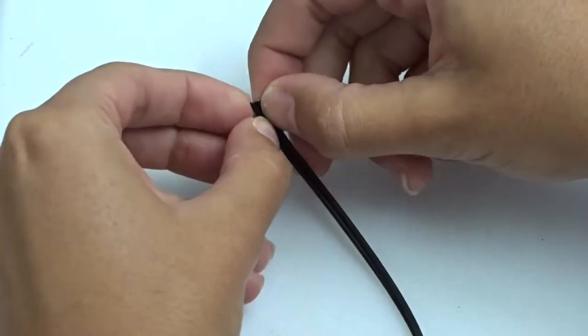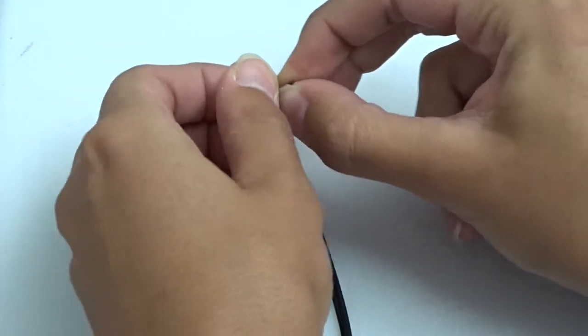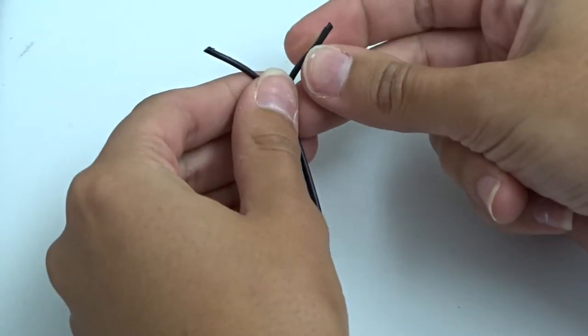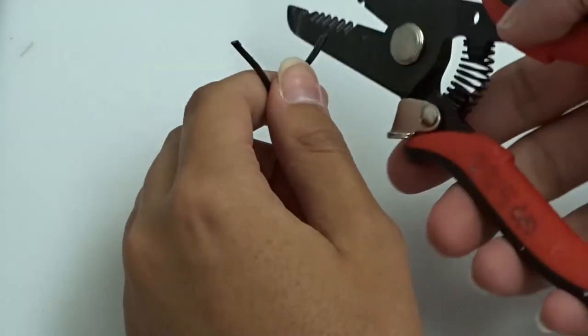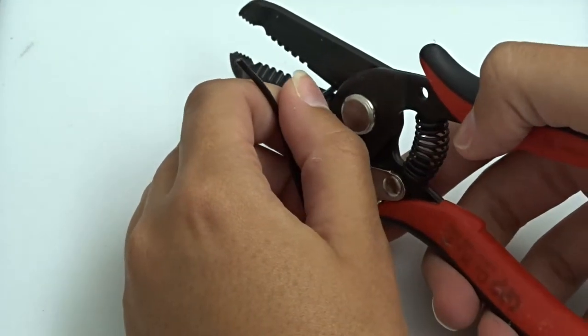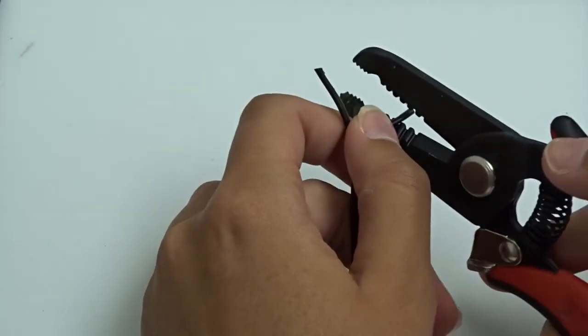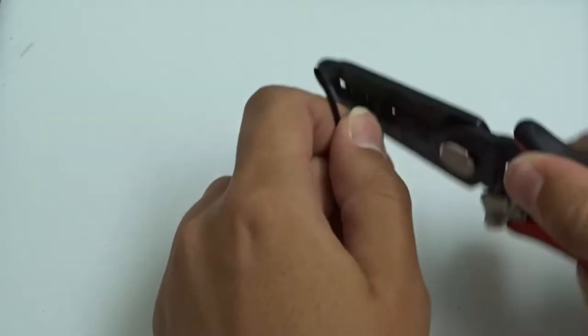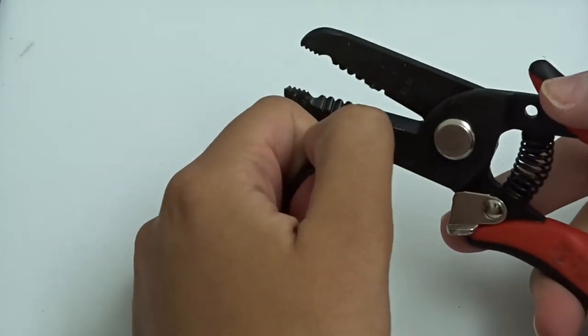Next, separate an inch of one end of the wire. Cut one strand of a wire a quarter inch shorter than the other. Strip a quarter inch of insulation off each strand of the separated end of the wire.